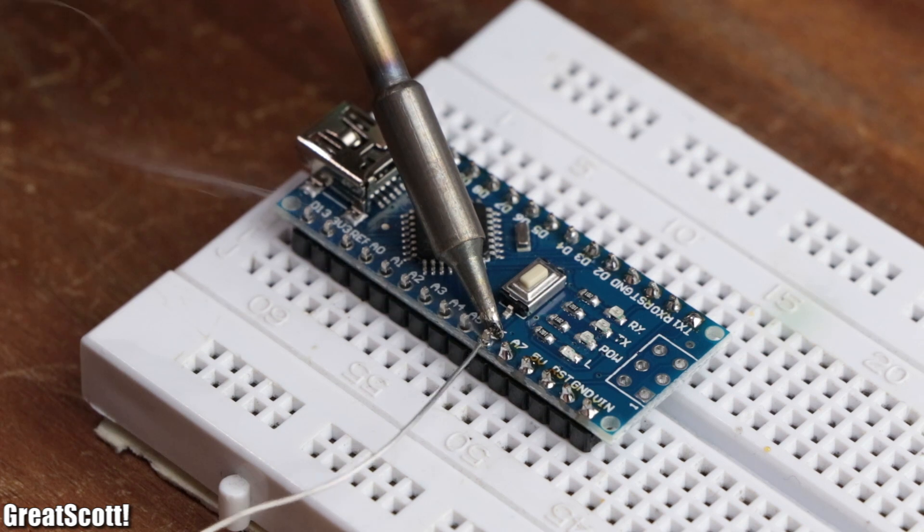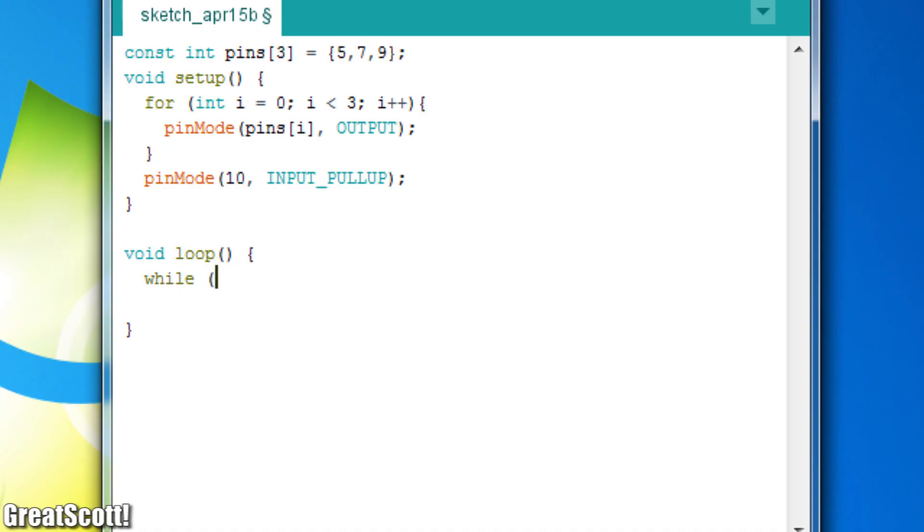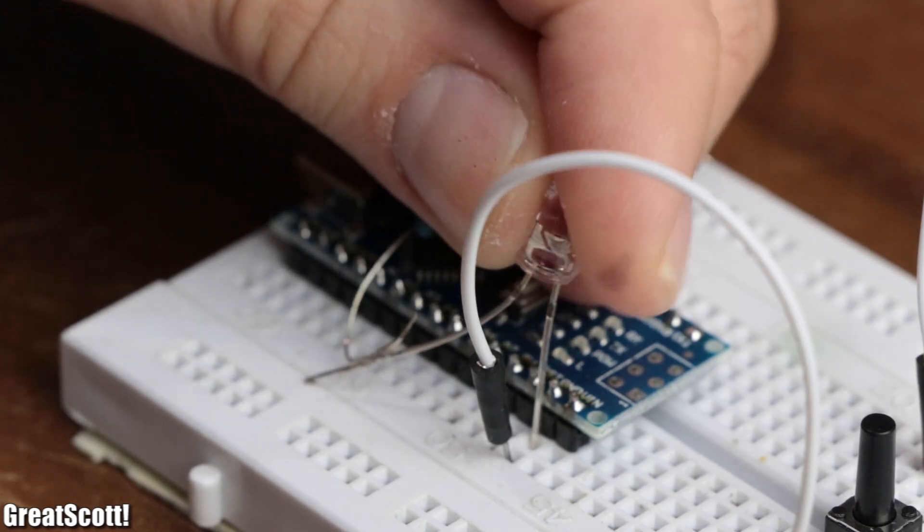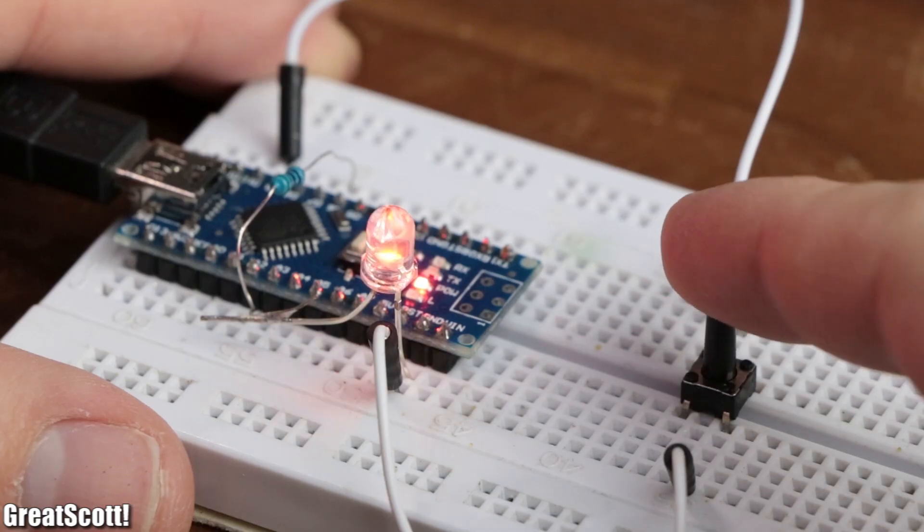During the last Arduino Basics 102 video I showed you how you can utilize control structures to create more complex sketches that can light up your LEDs in a variety of different ways.